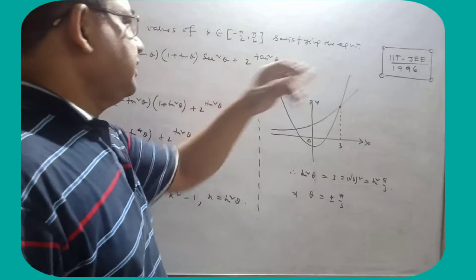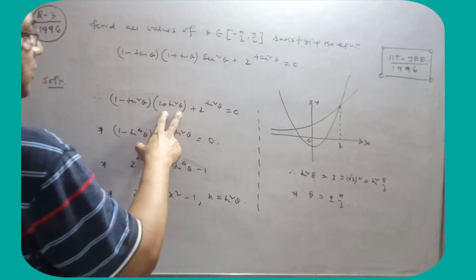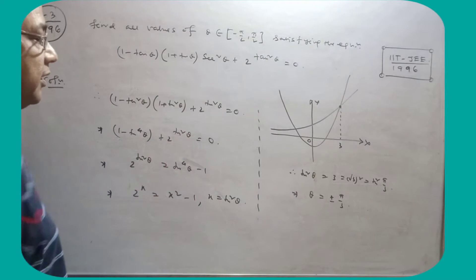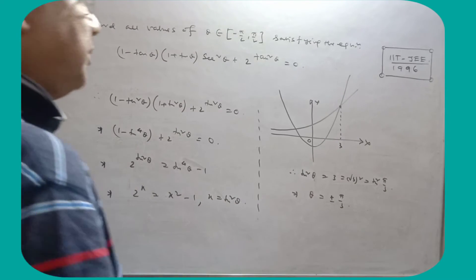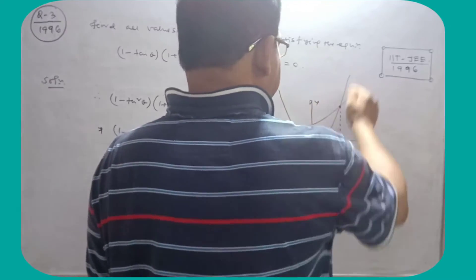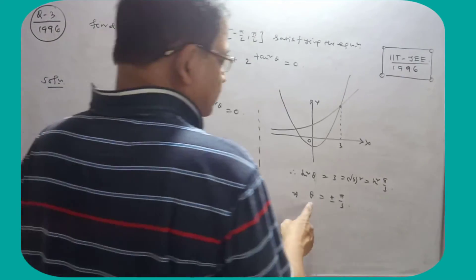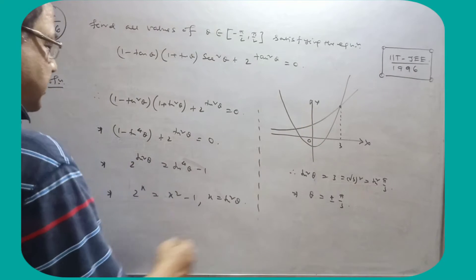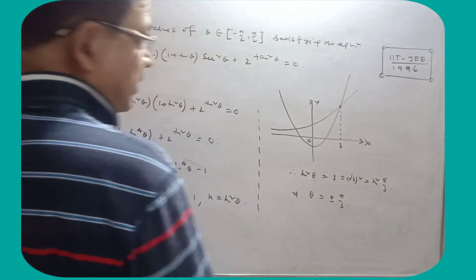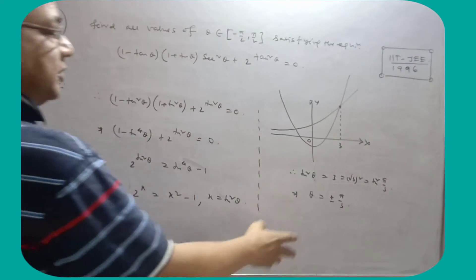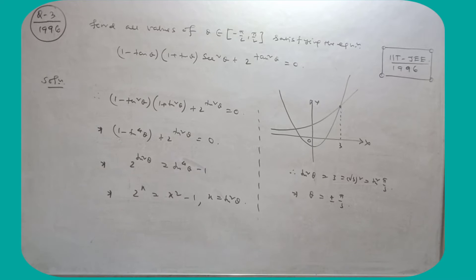Find all values of theta satisfying this equation. दोनों को multiply — 1 + tan²θ से। 6 + tan²θ = 1 + tan²θ वाला relation use किया। tan²θ को x consider करके: 2^x = x² − 1. यह 2^x का graph है और x² − 1 का graph है। tan²θ = 3, so that is equal to tan²(π/3). So theta का value ±π/3 है — without graph भी कह सकते थे, it is true only at x = 3. All values of theta: plus minus π/3. यह 1996 का question है, अच्छे से practice कर लेना।